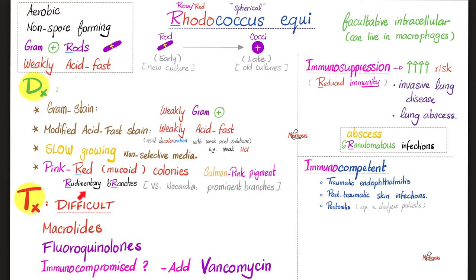The branches of Rhodococcus are rudimentary, not as robust as the branching filaments of Nocardia, which were very prominent. Rhodococcus is a facultative intracellular organism, which means it can live inside your macrophages, just like Nocardia. If you're immunocompromised, you are at a higher risk of Rhodococcus infection, namely invasive lung disease, lung abscesses, and granulomatous infections.